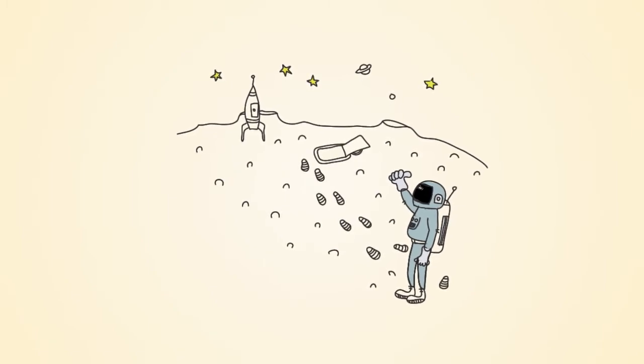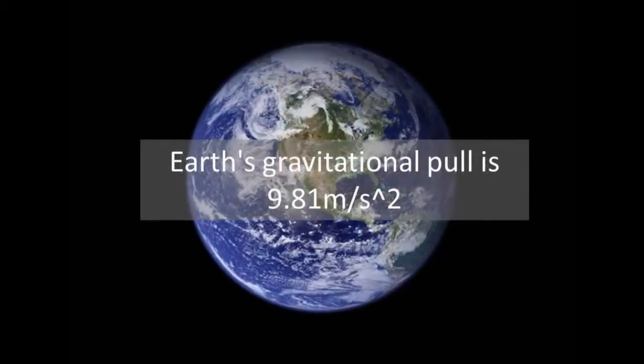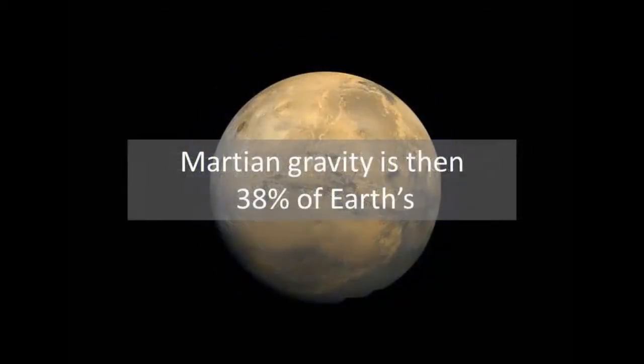For this unit, the student design project involves creating a device for walking on Mars. Mars' gravitational pull is 3.7 meters per second squared, as opposed to Earth's gravitational pull, which is 9.81 meters per second squared. That means Martian gravity is 38% of Earth's.